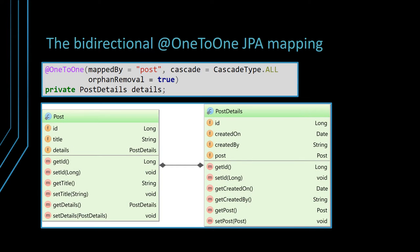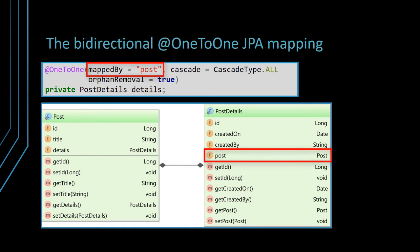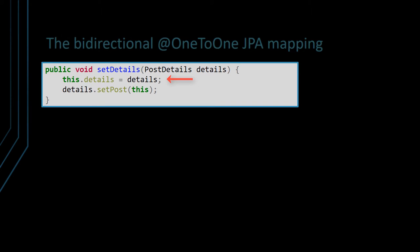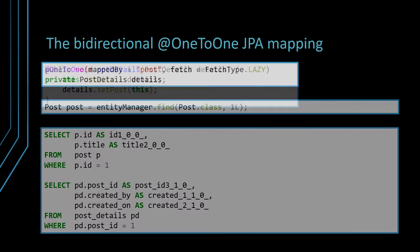Besides the one-to-one annotation mapping on the child side, the bidirectional one-to-one JPA association requires also a one-to-one annotation with the mappedBy attribute on the parent side. The mappedBy attribute defines the child side property which owns the bidirectional association. Just like for any bidirectional JPA relationship, it is good practice for the parent entity to define utility methods that synchronize both sides of the bidirectional association. In this case, the setDetails method takes care of both the details property of the parent post entity as well as the post property of the child postDetails entity.